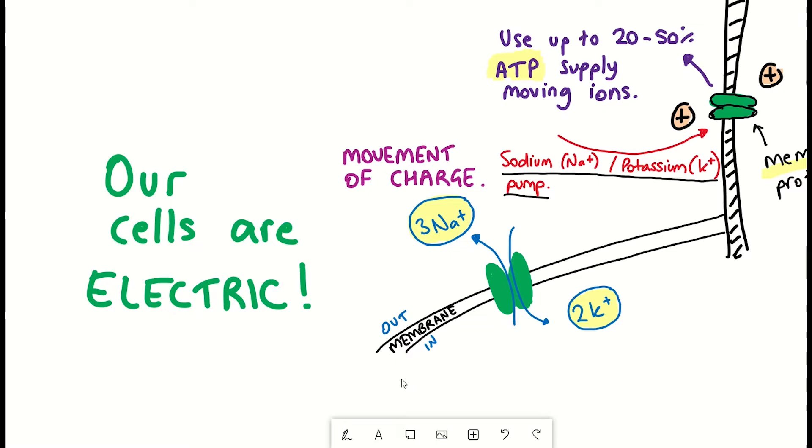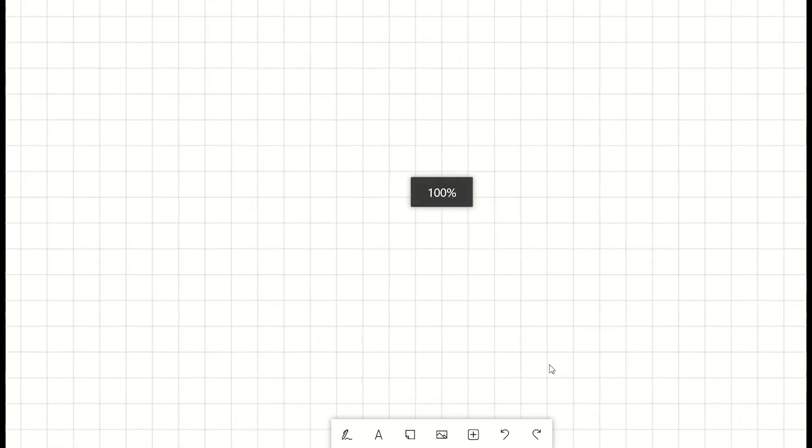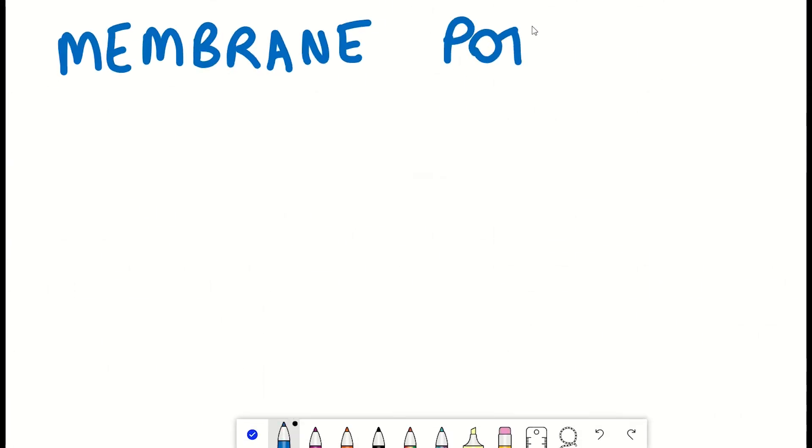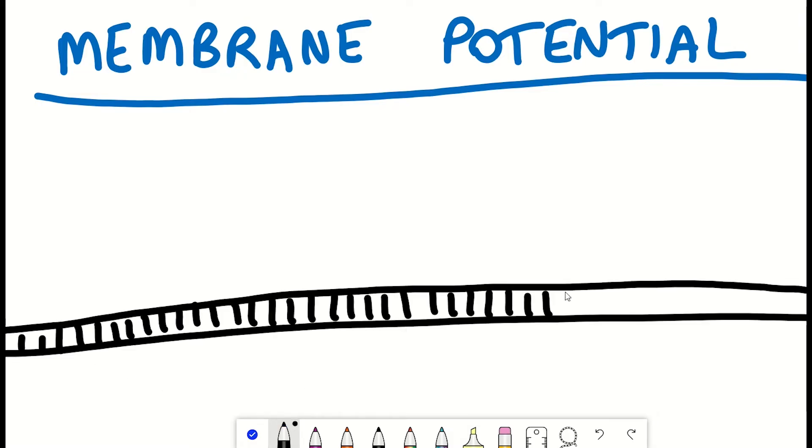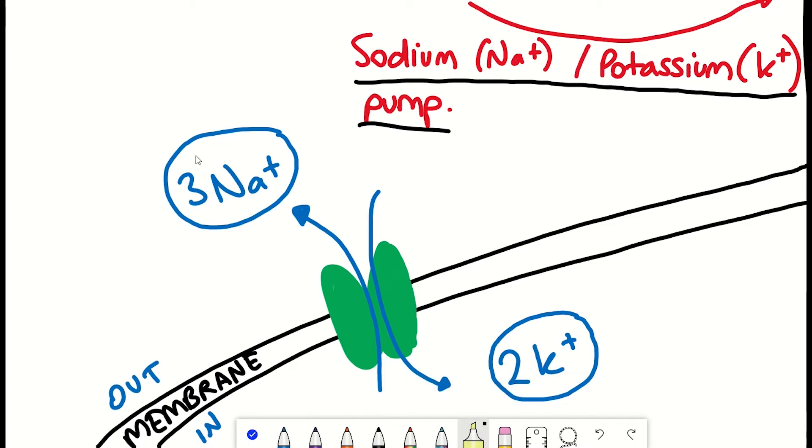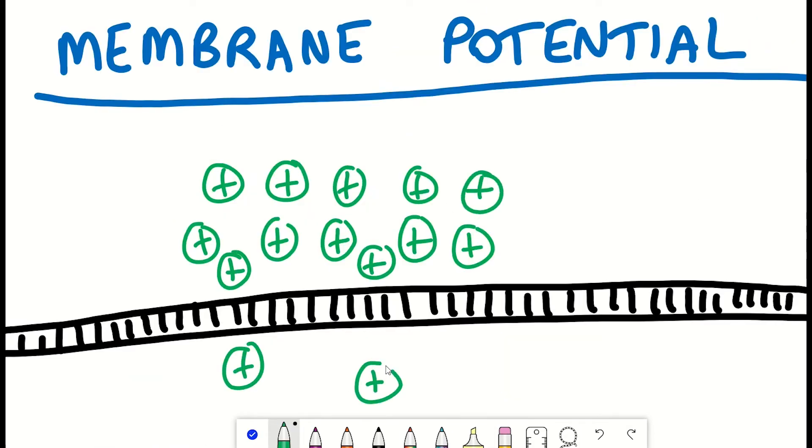So a very important concept to understand for this video is the fact that cells have a so-called electrical potential across their membrane. And this is because there's these different proteins that can actively or passively move these ions across the membrane. And so because these ions have charges, you can end up with one side of the membrane being more positive than the other.